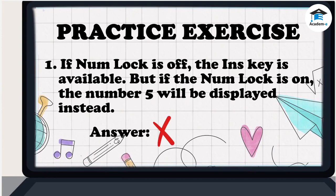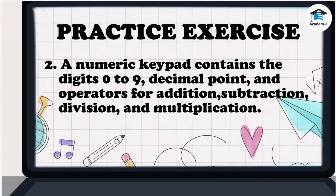Answer: Incorrect — it will display number zero instead of five. Question 2: A numeric keypad contains the digits zero to nine, a decimal point, and operators for addition, subtraction, division, and multiplication. Answer: This statement is correct.